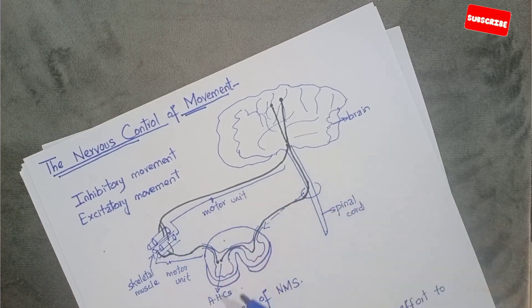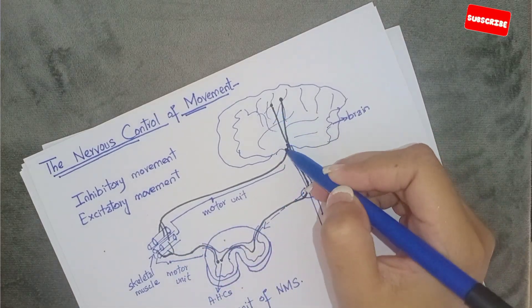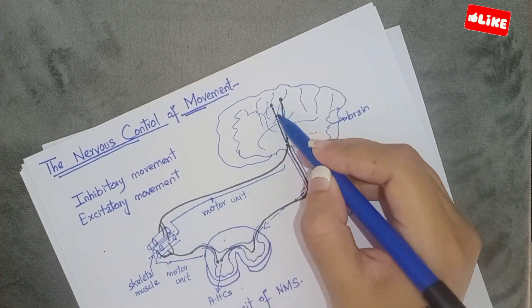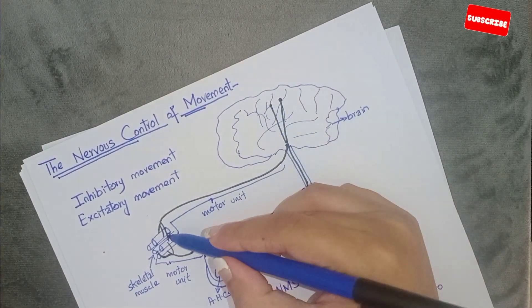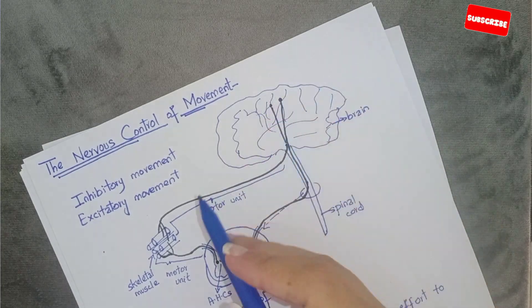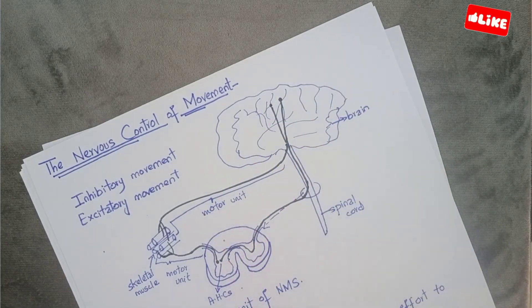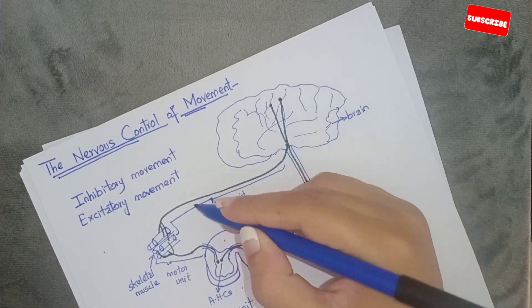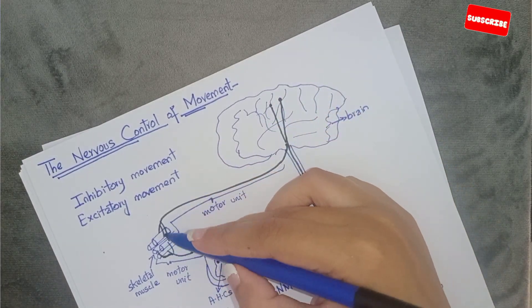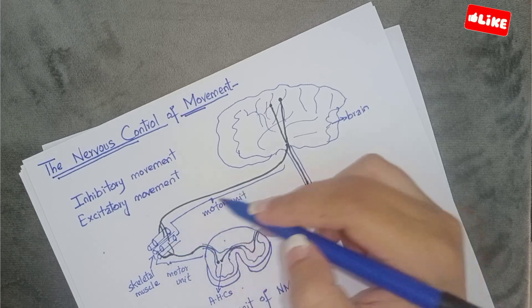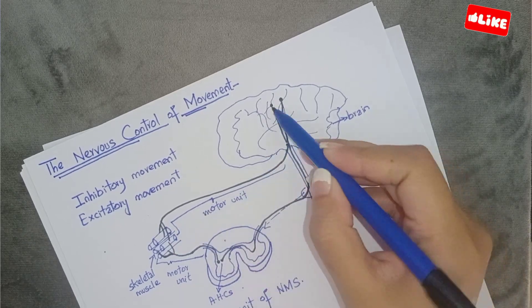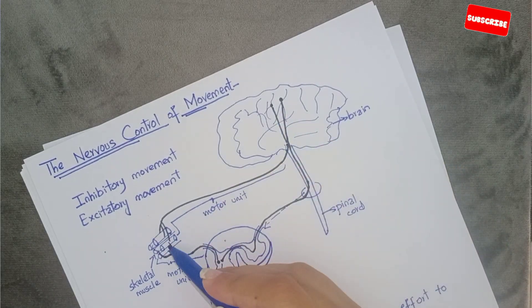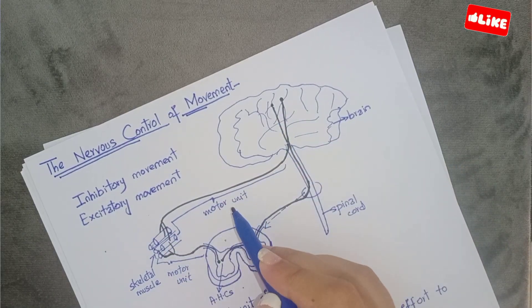The skeletal muscles are innervated by nerve fibers. What is the definition of the motor unit? It is a single nerve cell and all the muscle fibers it supplies. That is known as a motor unit — a single nerve cell and all the muscle fibers it supplies.